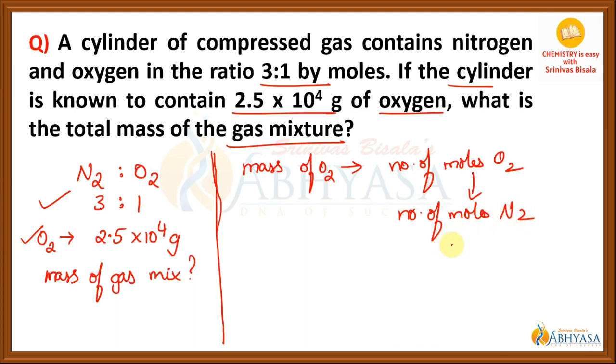And once we know the number of moles, we can calculate the mass of nitrogen. Then, we need to add the mass of oxygen and mass of nitrogen in order to get the mass of the gas mixture.